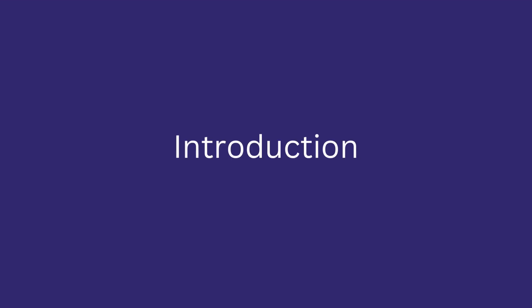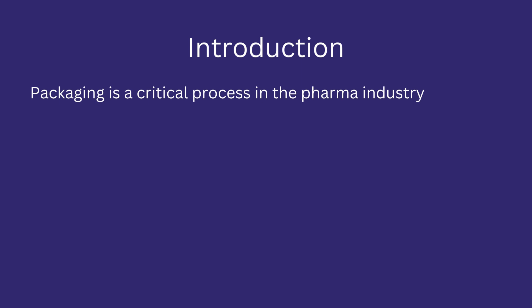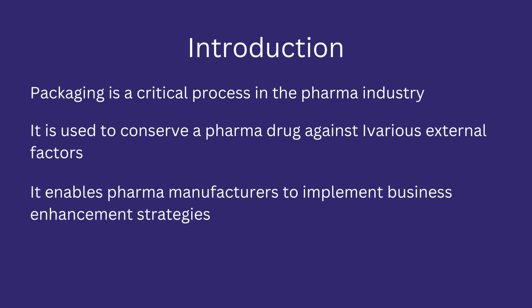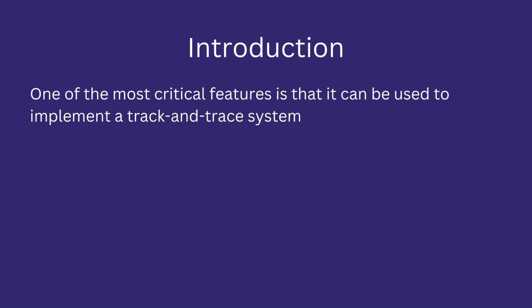Introduction: Packaging is a critical process in the pharma industry that can either make or break the entire pharma production. It is used to conserve a pharma product in packaging material against various external factors. Additionally, it enables pharma manufacturers to implement business enhancement strategies such as marketing and security. One of the most critical features of pharma packaging is that it can be used to implement a track and trace system.